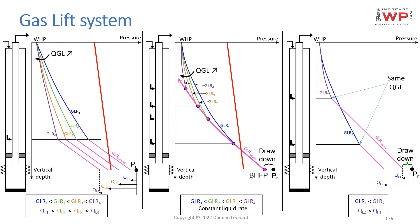When over-injecting, the extra amount of gas lift creates more pressure losses than lifting effects. But if you are not over-injecting — keeping the injection depth constant — the more gas lift I inject, the higher the drawdown I am able to apply on my formation and reservoir, and hence the higher the liquid rate I will be able to produce.